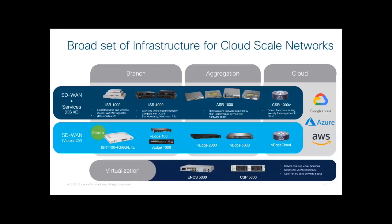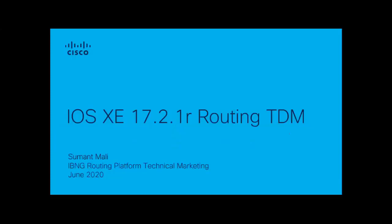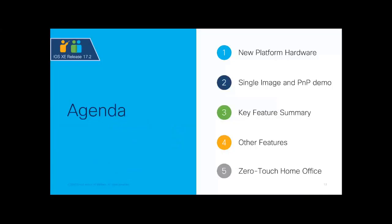Today we focus on IOS XE 17.2.1r routing release and its new features. We'll touch upon a new platform announced with 17.2, the single image and automation benefits — including a quick demo — for both SD-WAN and IOS XE use cases. Then we'll cover software features from a 17.2 perspective.